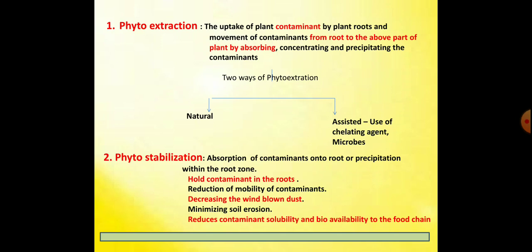The second category is phytostabilization. Here, the plant roots hold the contaminants, reducing their mobility. The roots also help in decreasing wind-blown dust, and the contaminants are reduced in their solubility and bioavailability to the food chain.